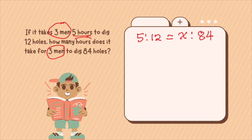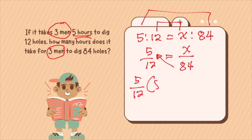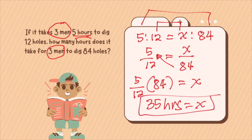So you just need to write this as extreme or mean, or you can write this as 5 over 12 equals X over 84. So 5 divided by 12 times 84, you will have 35 hours. That means that for the same number of men to dig 84 holes, they need 35 hours to do it.